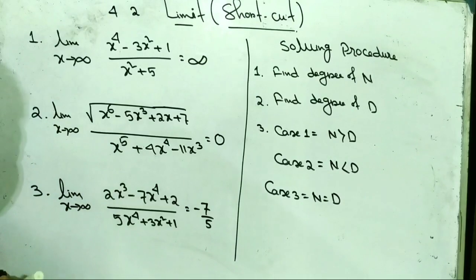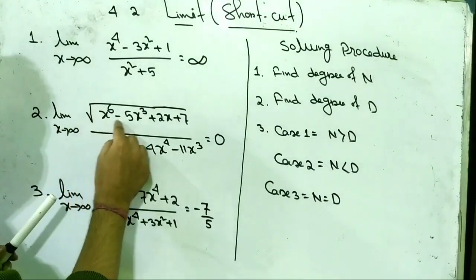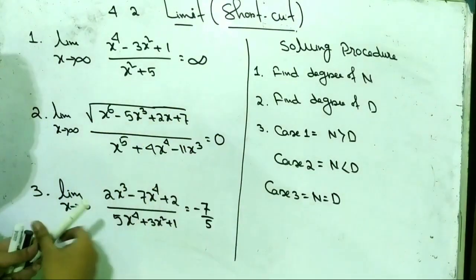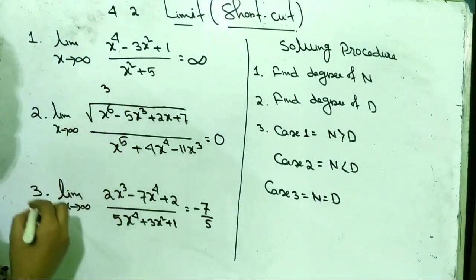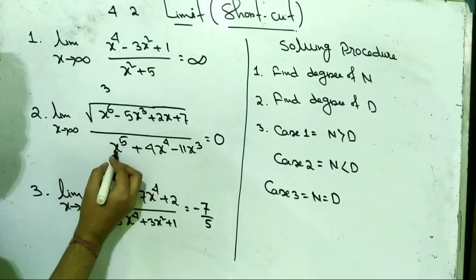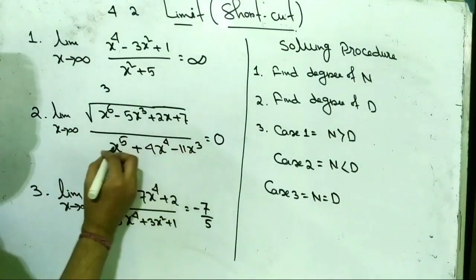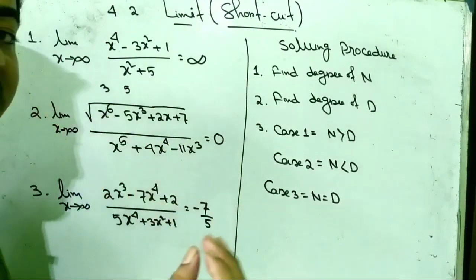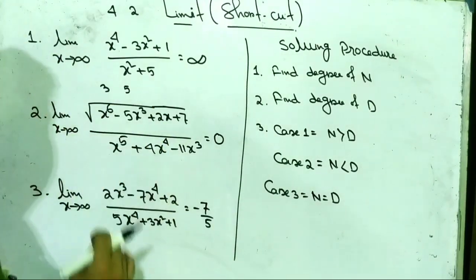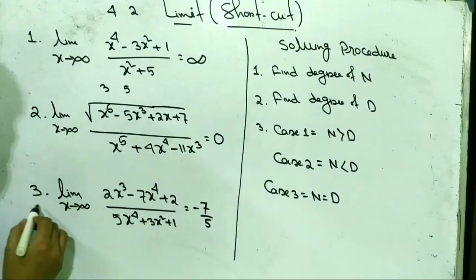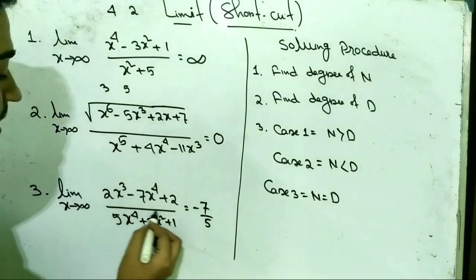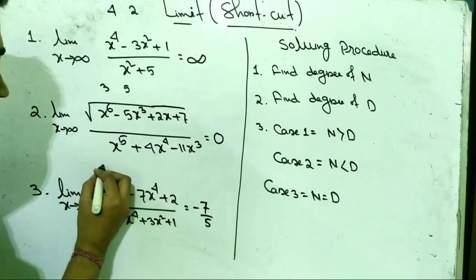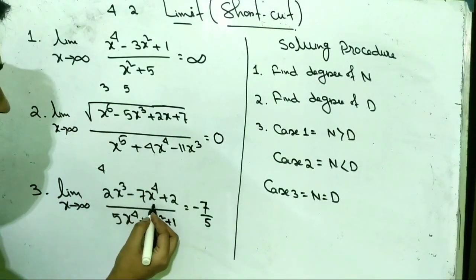Similarly, in the second problem, the degree of the numerator: root over x to the power 6, so when we bring it out of the root it becomes 3. And the degree of the denominator is 5. In problem number 3, the degree of the numerator — here x has power 3 and x has power 4 — we take the highest power, so the degree of the numerator is 4.